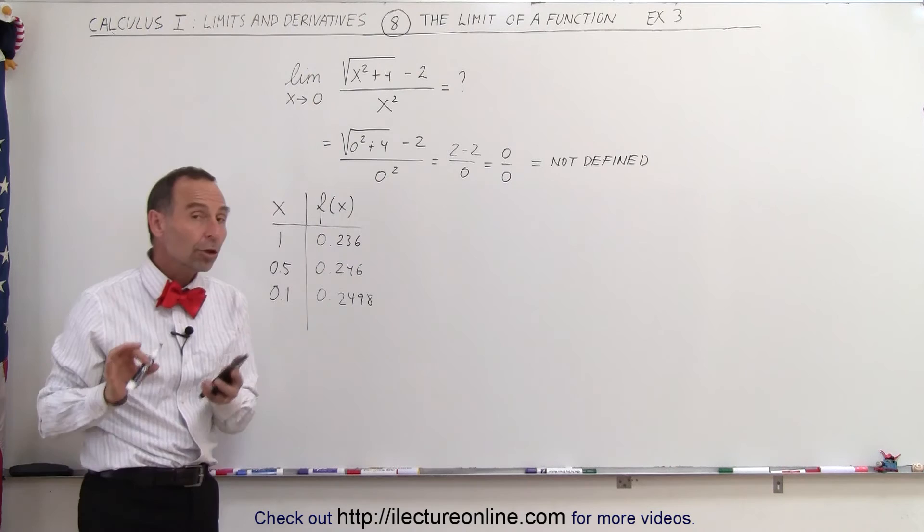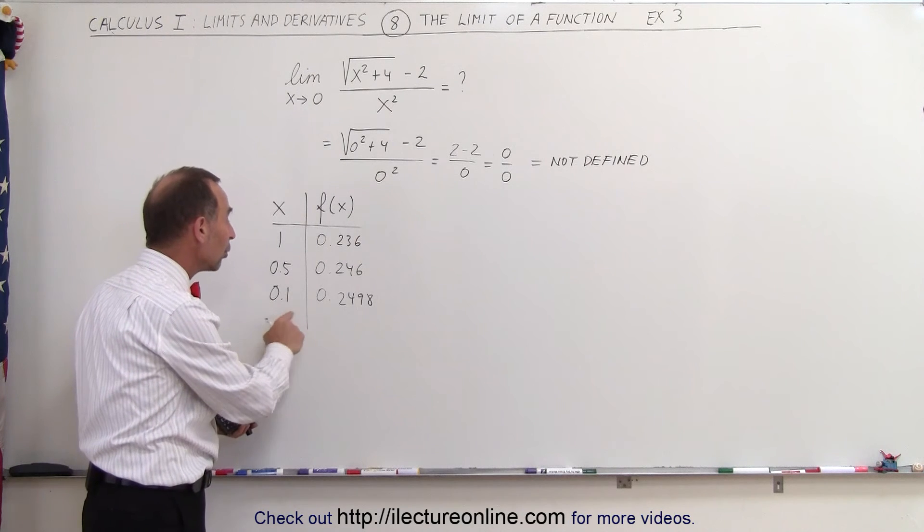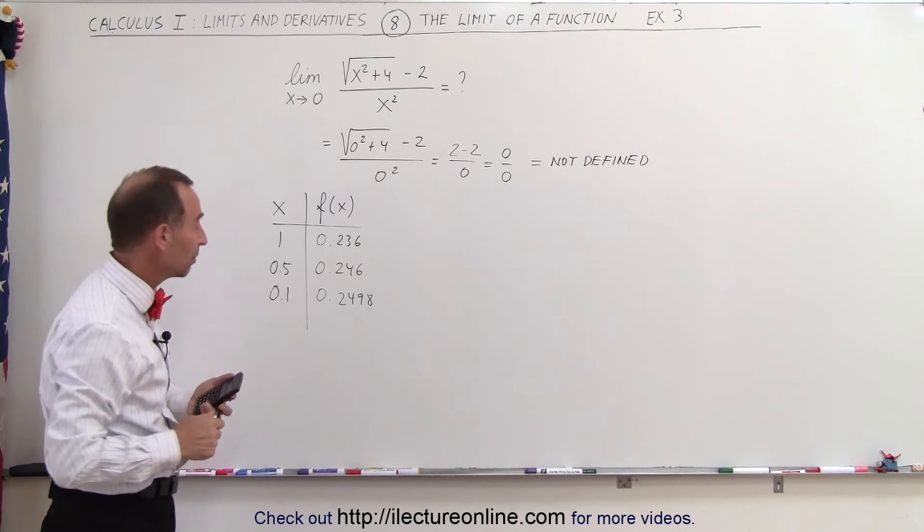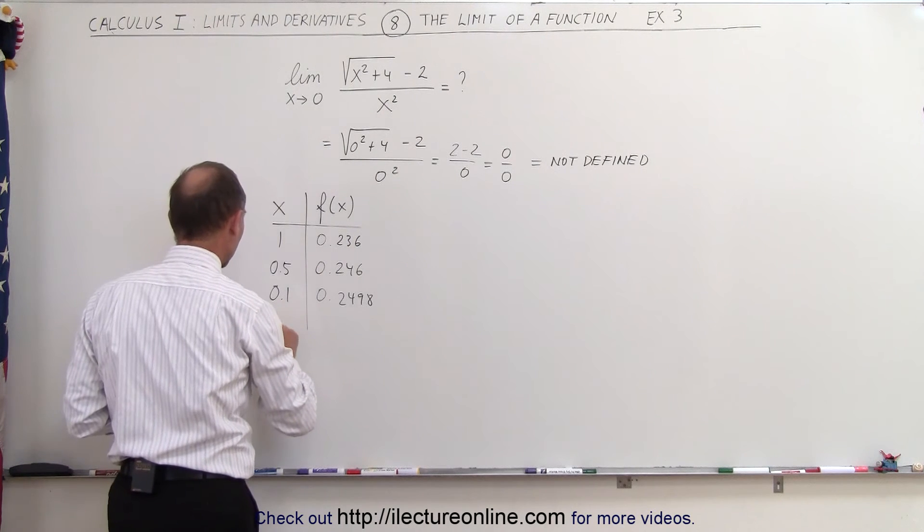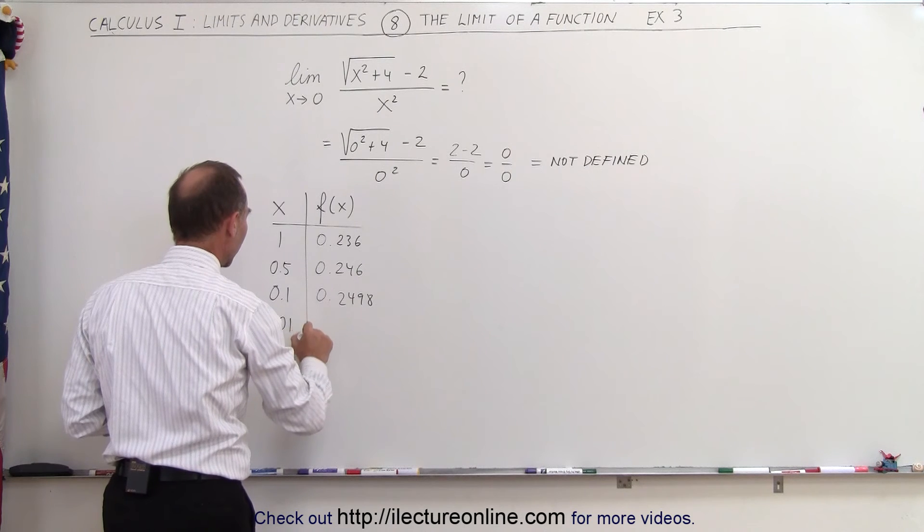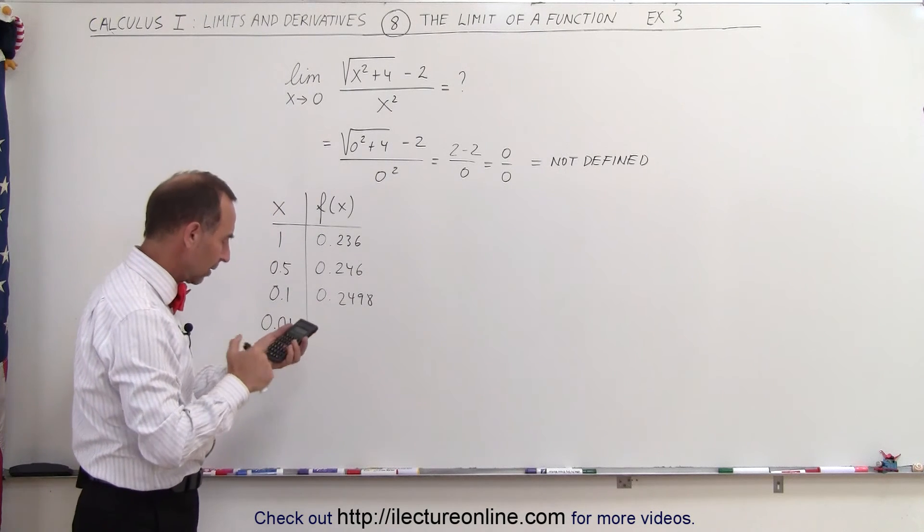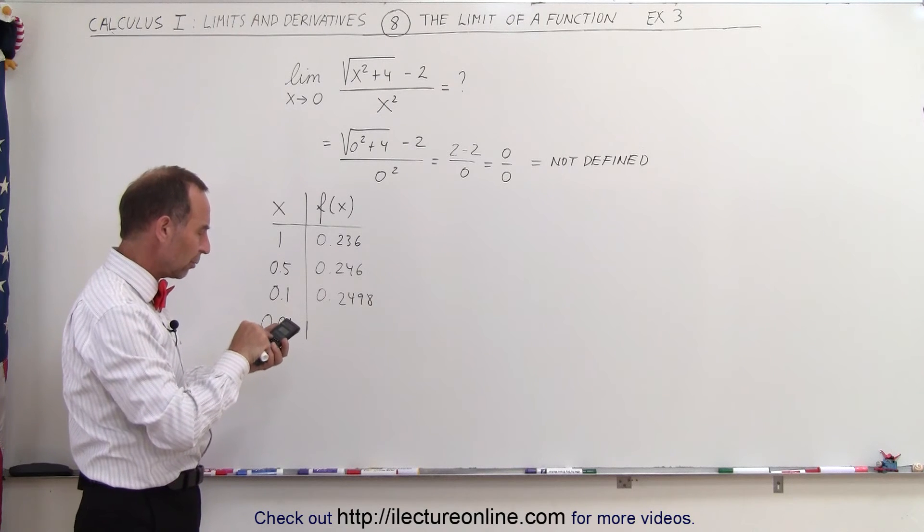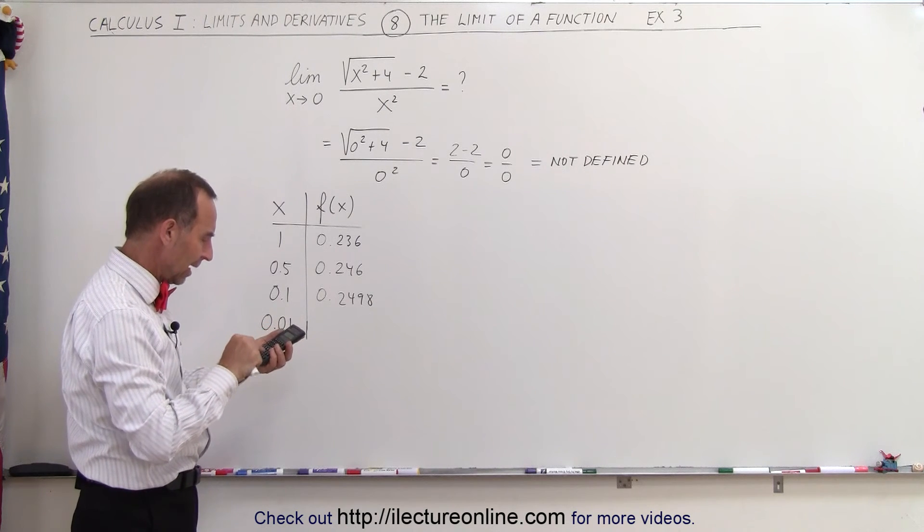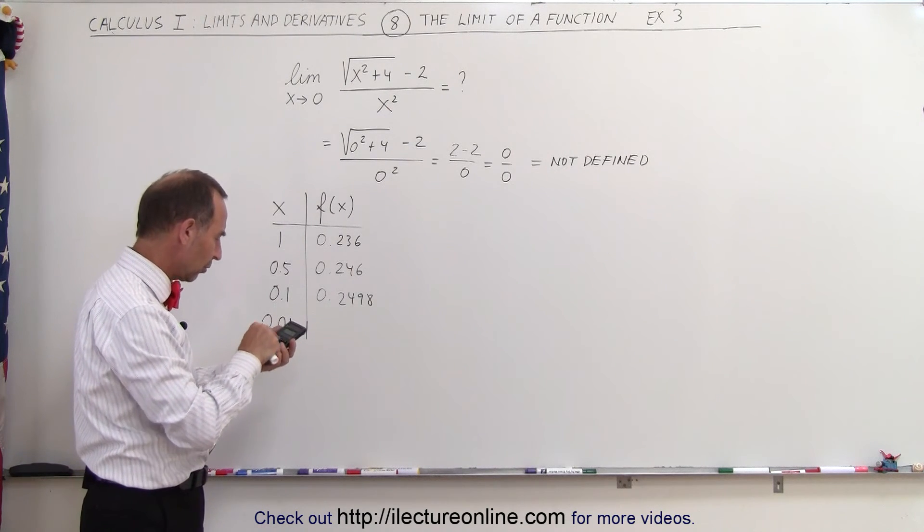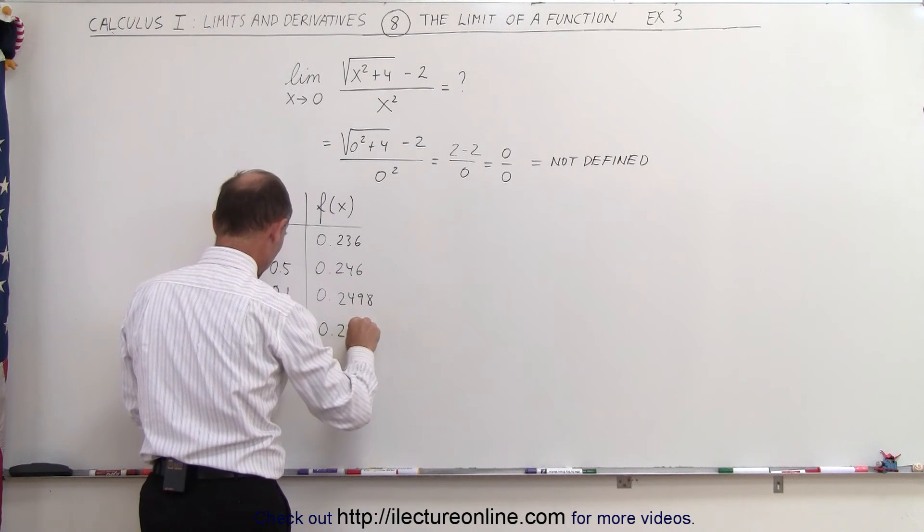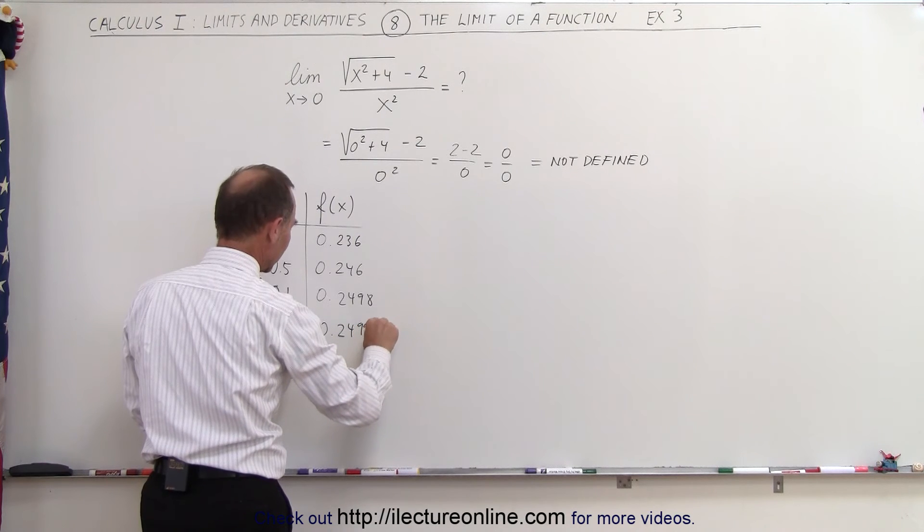It's beginning to look like the function approaches 0.25 as x approaches 0. If that's the case, of course, there would be a limit. But now let's let x become 0.01 and see what happens. So that becomes 0.01 squared plus 4. Take the square root, subtract 2 from that, and divide by 0.01 squared. And I get 0.249998.